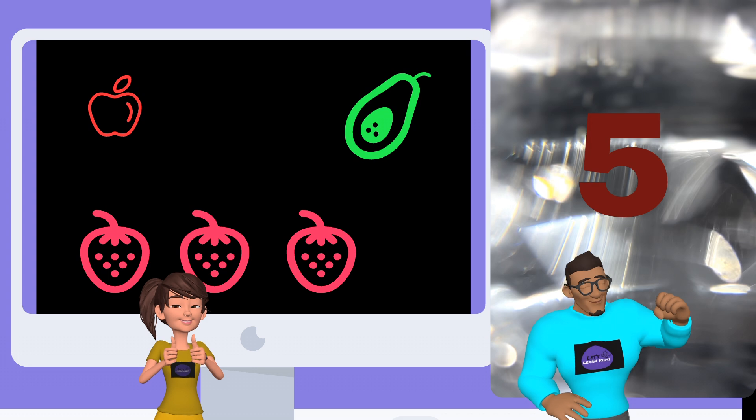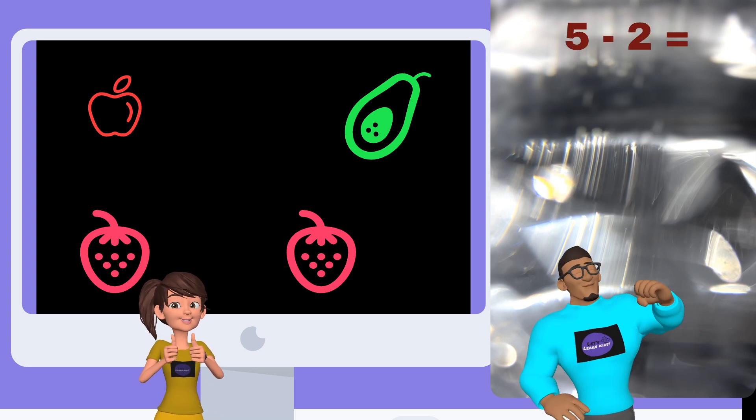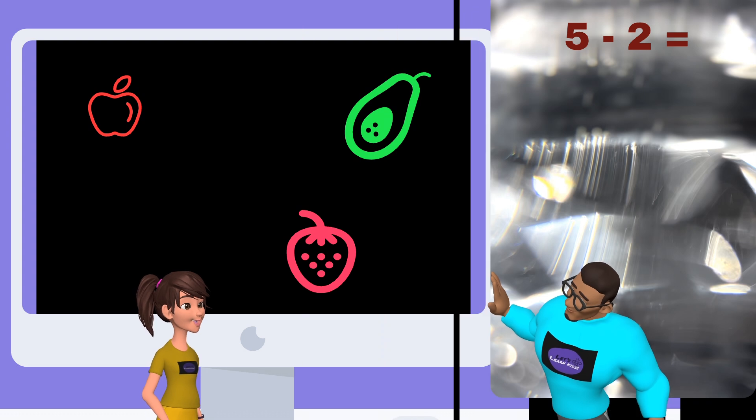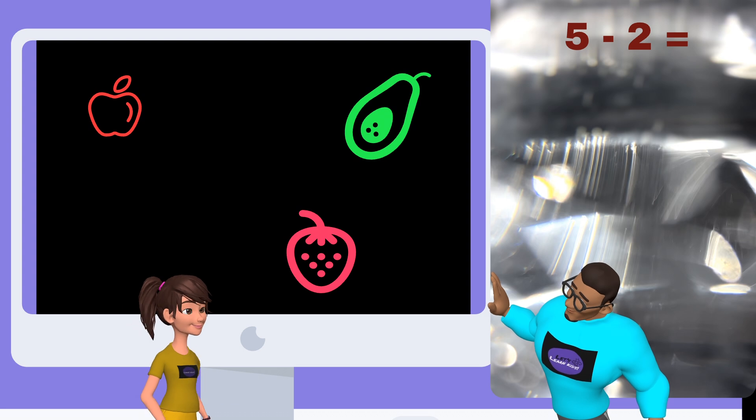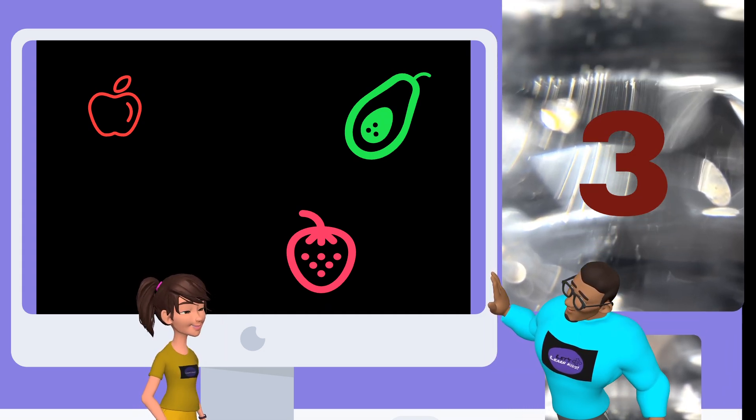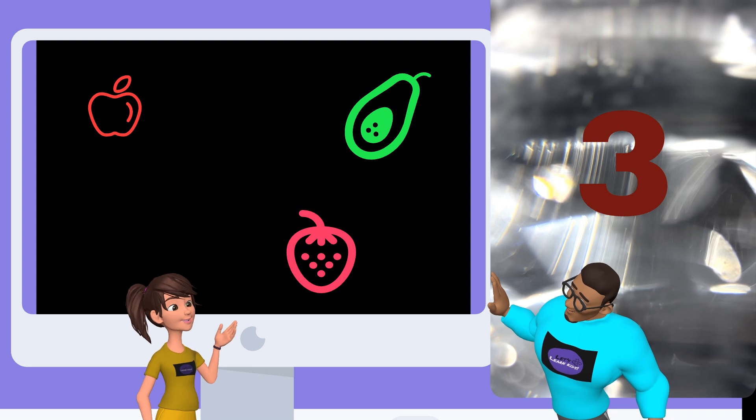So now what if I take two more strawberries and give them to Manny? That's five minus two equals... what is the answer kids? Let's count. That is right, very good kids. The answer is three. So we have one apple, one avocado, and one strawberry left.